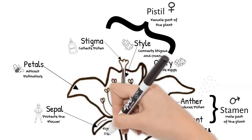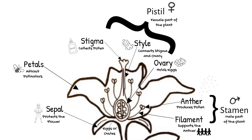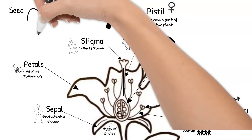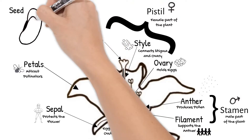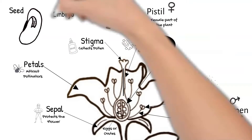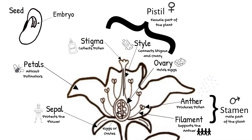The sperm from the pollen travels down this pollen tube. The ovary is a tiny chamber that contains the plant's eggs, also called ovules. The sperm from the pollen will fertilize one egg, which then will form a seed. Inside a seed is a tiny plant called an embryo, as well as food for the plant to live on until it is able to grow big enough to make its own.